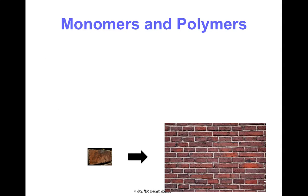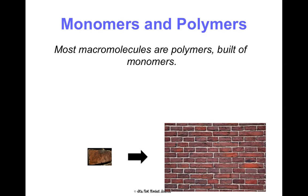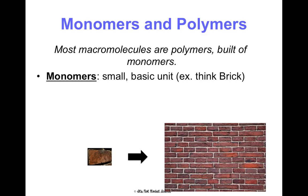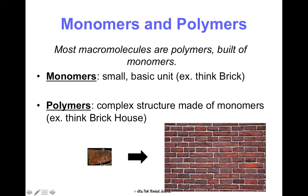Some terms we need to understand are the difference between a monomer and a polymer. These are words we use to describe the structure of a macromolecule. Most macromolecules are polymers built of monomers. Monomers are a small, basic unit — think of a brick, like you see in the picture on the left. Polymers are a complex structure made of monomers, so think of a brick wall or a house. We'll use these two words to understand the structure of each macromolecule as we go through them.